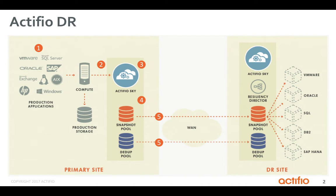Five, data is replicated incrementally with StreamSnap for lower RPO, or with low bandwidth dedupe async replication between dedupe pools for enhanced bandwidth efficiency. Six, both replication options result in backup images ready for immediate use.